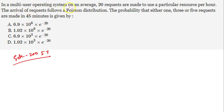In the GATE question: in a multi-user operating system, on average 20 requests are made to use a particular resource per hour. The arrival of requests follows a Poisson distribution. The probability that either one, three, or five requests are made in 45 minutes is given by what?